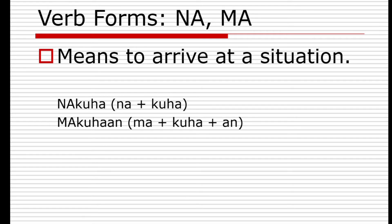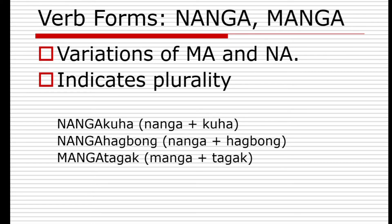Other verb forms are 'na' and 'ma'. These prefixes mean to arrive at a situation. 'Na' plus 'kuha' gives 'nakuha'; 'ma' plus 'kuha' plus 'an' gives 'makuhaan'. 'Nanga' and 'manga' are variations of 'na' and 'ma' and indicate plurality. For example, 'nangakuha' comes from 'na' plus 'kuha', and 'nangahagbong' comes from 'nanga' plus 'hagbong'. 'Nangakuha ang mga prutas' or 'nangahagbong ang mga bituon' — do you believe stars will fall from the skies?